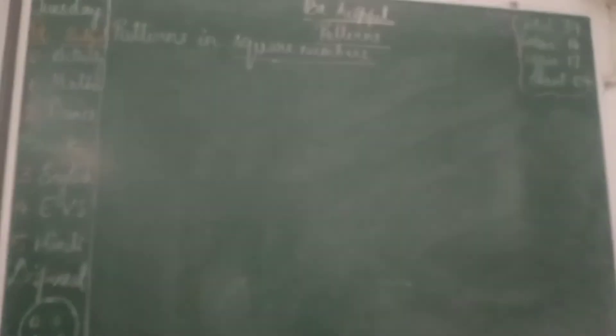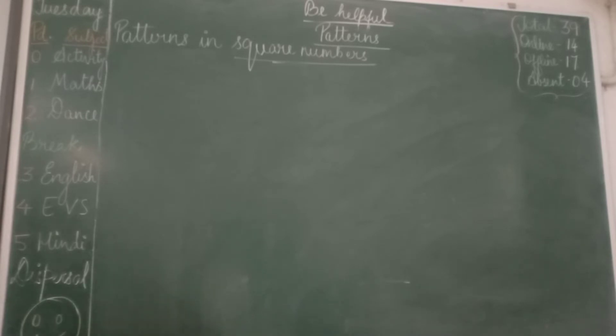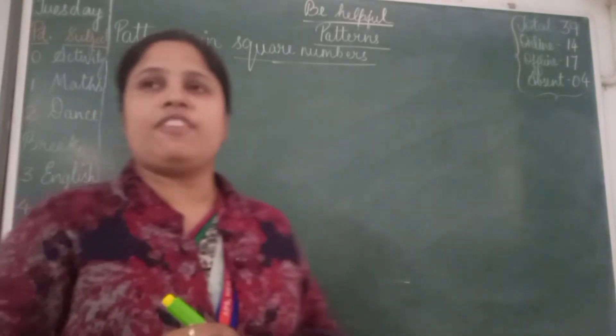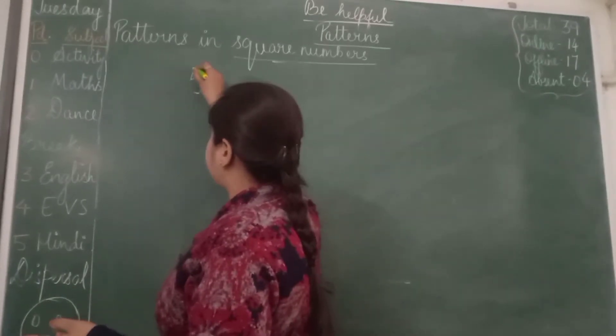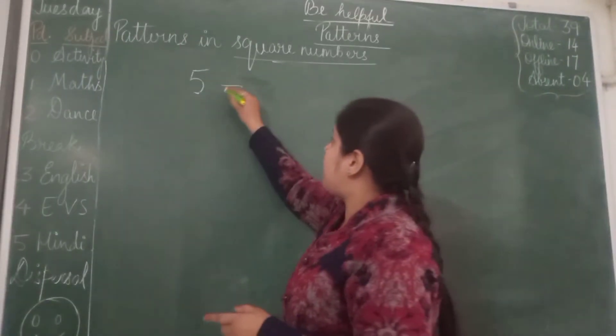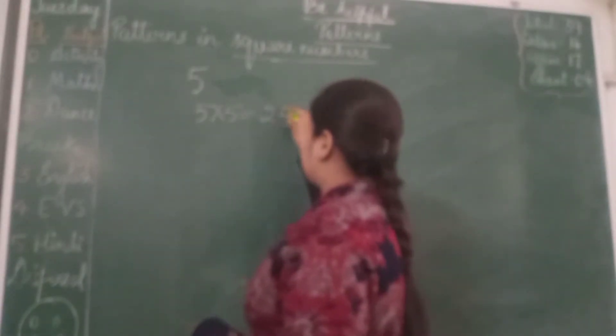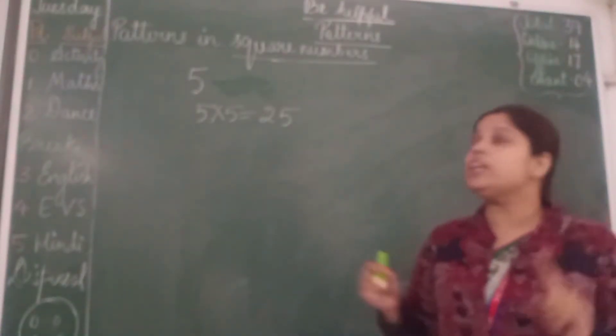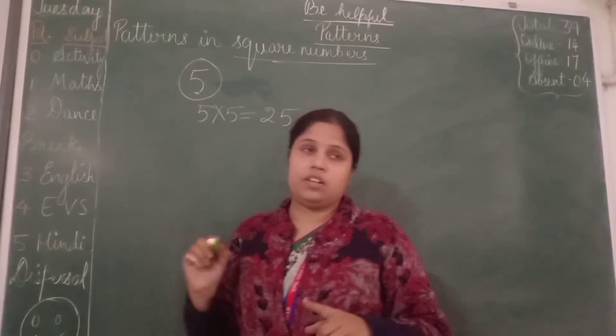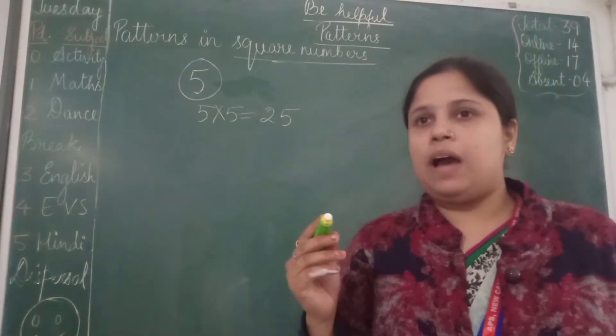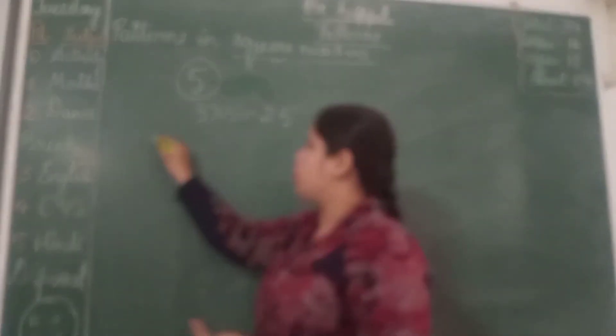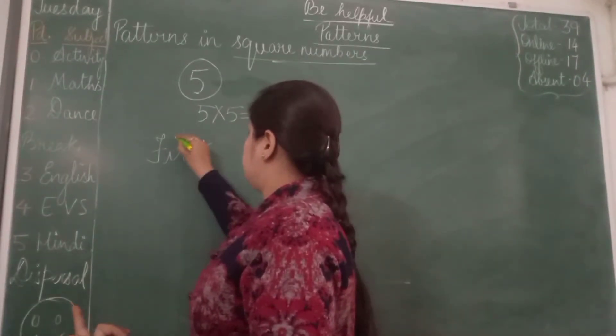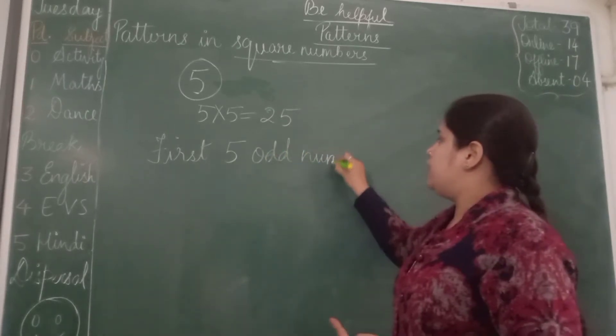Now we will be discussing the next property of square numbers. Here we can see that if we are trying to find the square number of any number. For example, we are going to find the square number of 5. What is the square number of 5? We can directly write 5 into 5 which gives us 25. But there is a pattern also. Since we need to find out the square pattern of number 5, what we can do is we can add first 5 odd numbers.